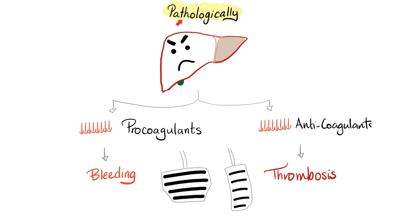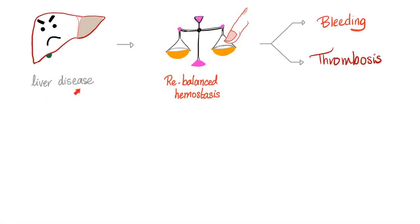If you have liver disease, liver failure, or cirrhosis, your liver is toast. You are not secreting procoagulants or anticoagulants properly, so you will bleed, thrombose, or have both. When I have liver disease, do not assume I am automatically bleeding — I have a rebalanced hemostasis. This can lead to bleeding, thrombosis, or both.